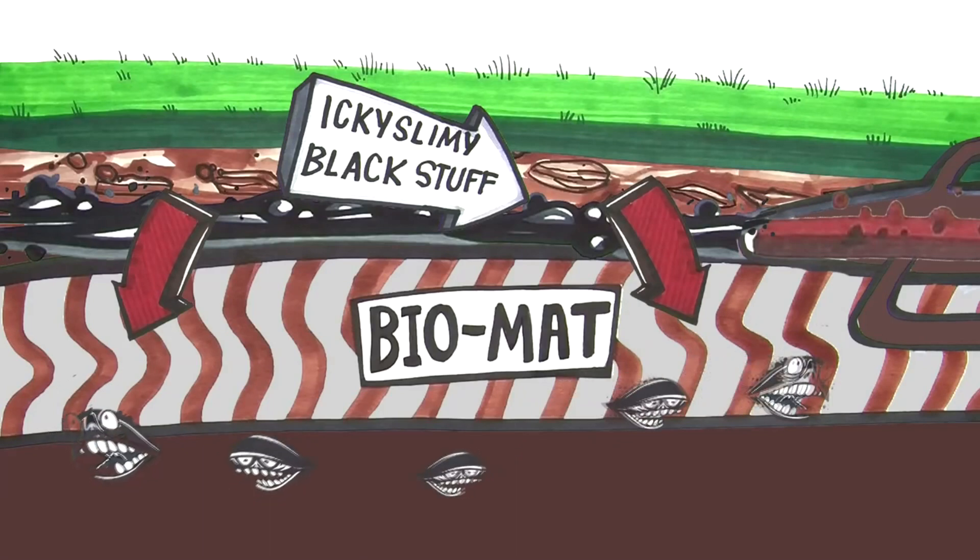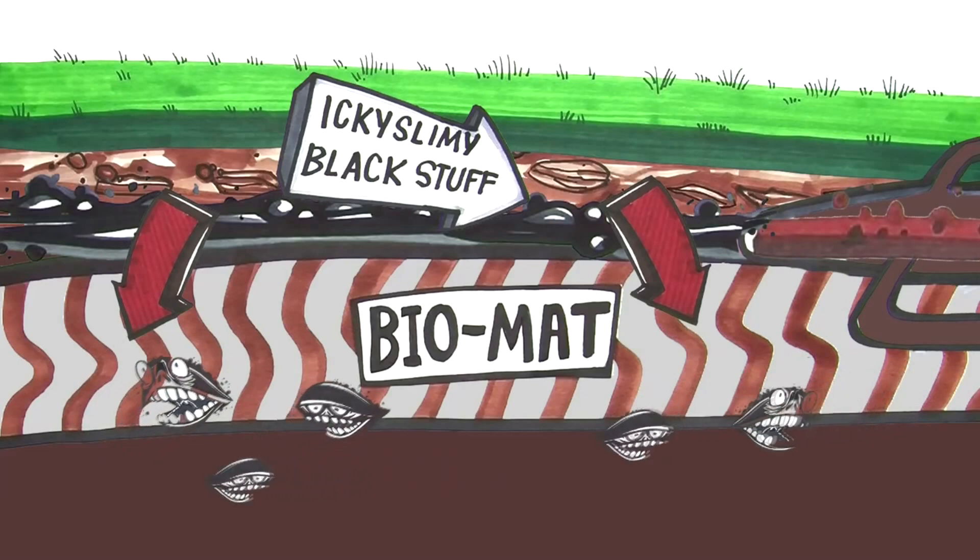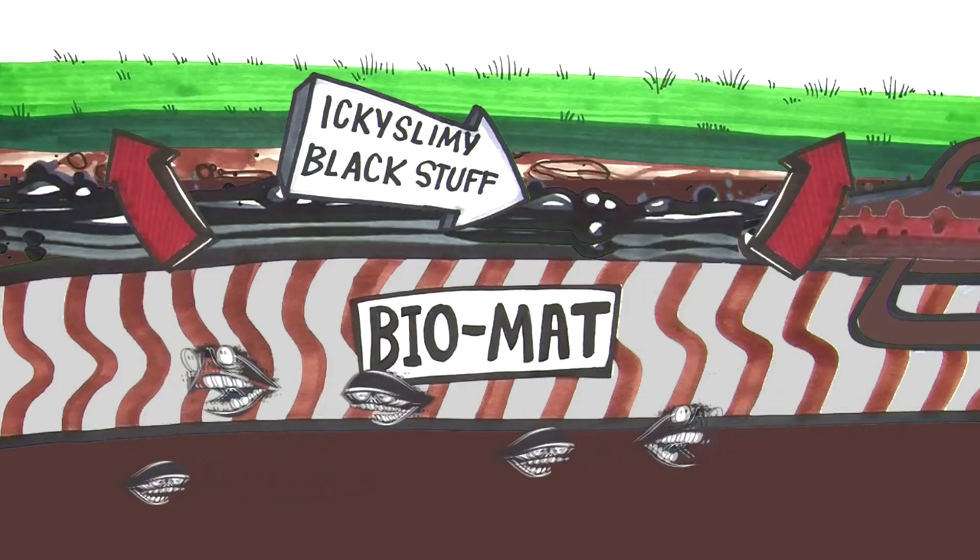Wastewater can still flow through this biomat initially, but over time, the accumulation of this substance becomes too much, leading to a clog and, inevitably, system failure.